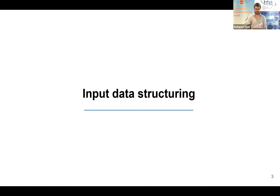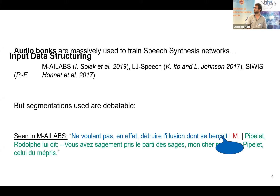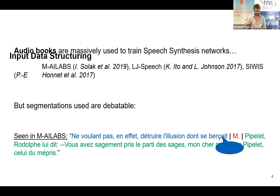Audiobooks are massively used to train text-to-speech networks, as they generally provide tens or hundreds of hours of recorded speech with corresponding text. The data must be aligned and cut into multiple segments called utterances. Numerous examples have been prepared, such as MA Labs, LJ Speech, and CIWS. However, the way segmentation is done is debatable and not always clearly explained. Usually utterance boundaries match punctuation marks, but not always — for example, in MA Labs, the first boundary cuts in the middle of a sentence, and the second matches a period standing for an abbreviation.